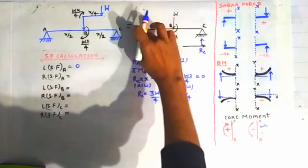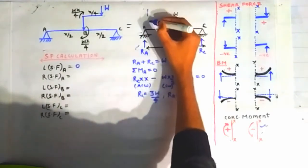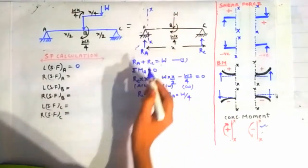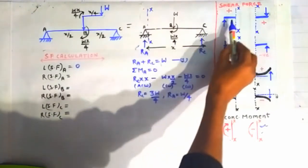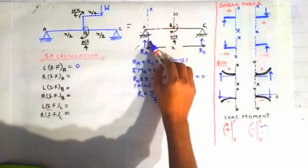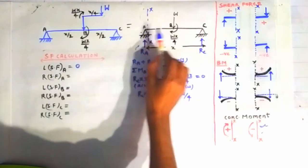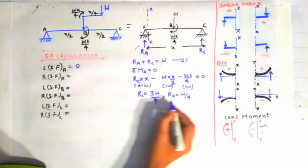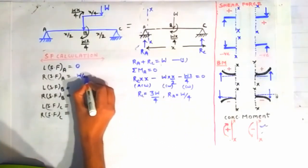Now shear force on the right side of point A: we draw a section on the right side of point A. Looking on the left side of this section, Ra is acting upward, contributing toward a positive shear force using this sign convention. So the shear force is +Ra = +W/4.